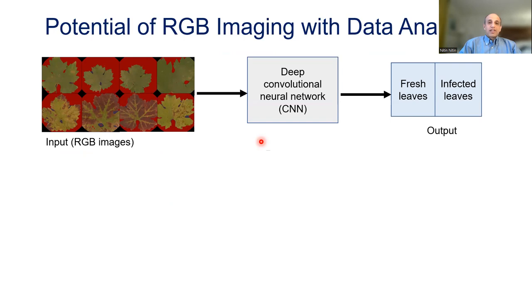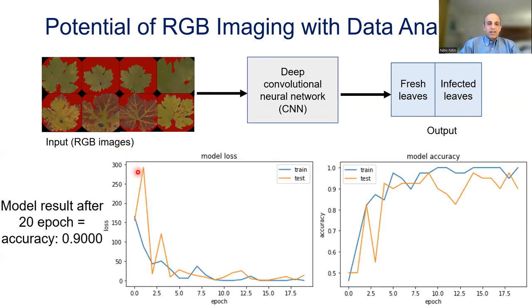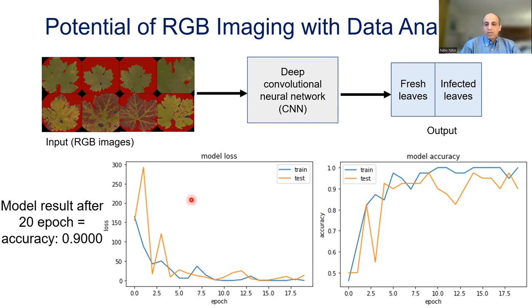We have also investigated the potential of RGB imaging with data analysis. Using images collected with a cell phone camera with filters to measure red, green, and blue channels, and applying a deep convolutional neural network — the Faster R-CNN model — we are able to discriminate between infected and non-infected leaves. Within 20 epochs of running through the deep convolutional neural network, we achieved high accuracy approaching 0.9, and the loss factor decreases significantly as the number of epochs increases.